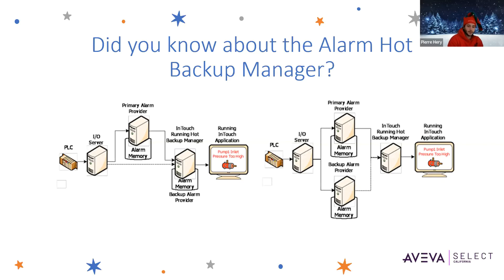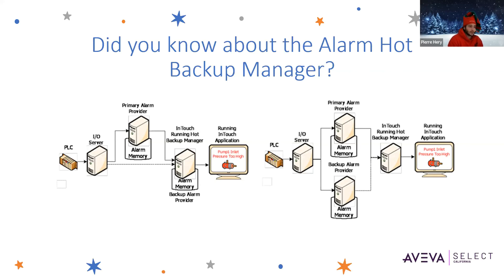You can use the Alarm Hot Backup Manager's configuration utility to create a duplicate alarm provider. Here you have two configurations shown on this screen. On the left, you can see the Hot Backup Manager and the Backup Provider on the same node. But on the right image, you can see that you can also use a schema where the Hot Backup Manager uses a secondary current alarm repository as a backup provider.